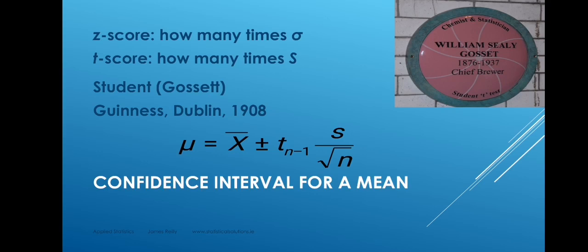The z-score means how many standard deviations a value is away from the mean of a normal distribution. But the t-score is how many s's — how many estimated standard deviations — a value is away from the mean in a normal distribution. Gossett came up with this idea in 1908, and it provides us with an alternative formula for a confidence interval for a population mean. We say mu equals x bar plus or minus t — we're using a t-score instead of a z-score.